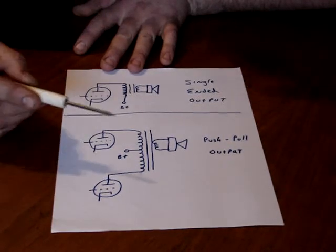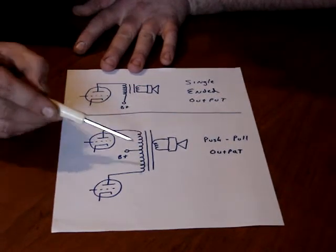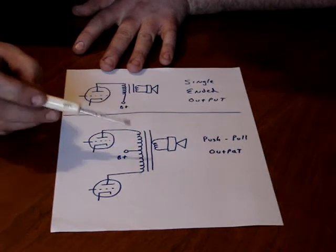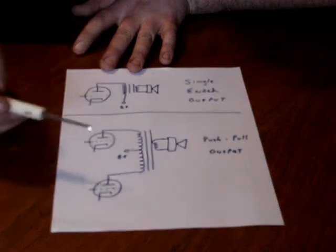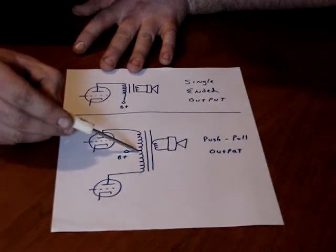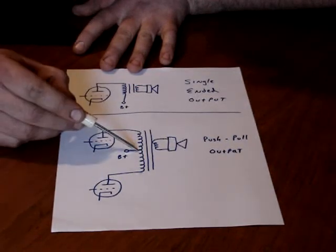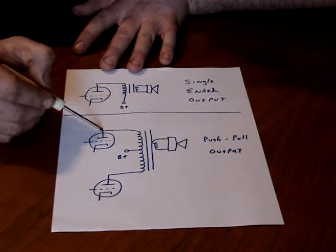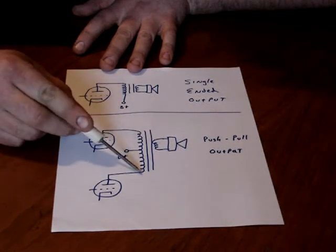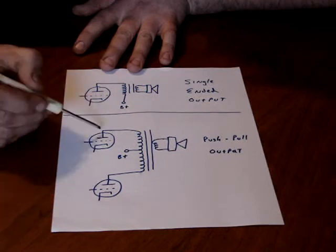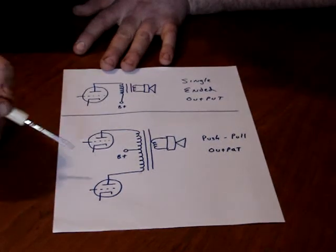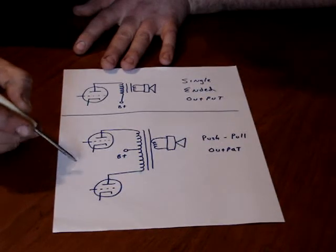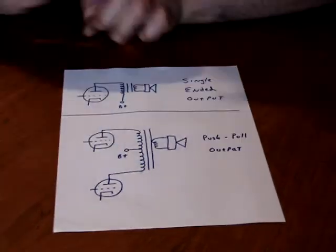Now, push-pull has a bigger output transformer with a center tap. The output part is the same. You have an 8-ohm winding connected to an 8-ohm speaker, or whatever. The input side, or primary, the B-plus is connected to the center tap, and you have a tube hooked on to each end of the transformer. The plate of the tube is connected to the transformer. Now, the way this works is, your AC signal comes in, which I should draw.